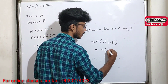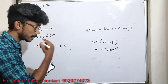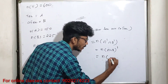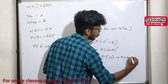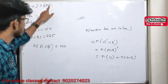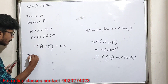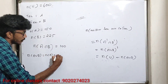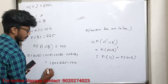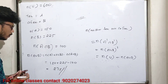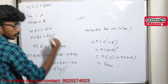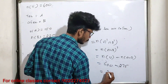N(A complement ∩ B complement) equals N(A ∪ B) complement. The formula is N(A ∪ B) = N(A) + N(B) − N(A ∩ B). N(A) is 150. So N(A ∪ B) equals 225. Total students are 600 minus 225. The answer is 225.